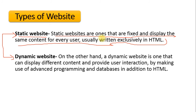A dynamic website, on the other hand, is one that can display different contents and provide user interaction by making use of advanced programming and databases in addition to HTML. Dynamic websites interact with the user — for example, if you visit a website where you can register and then log in to retrieve different information, that website is dynamic. In short, a dynamic website is interactive with the user, and depending on the user's interaction, different contents or files are delivered to the user.